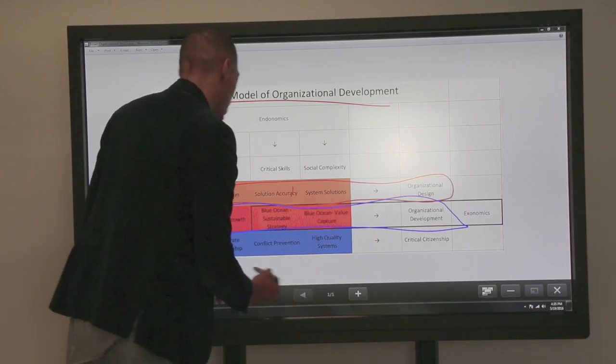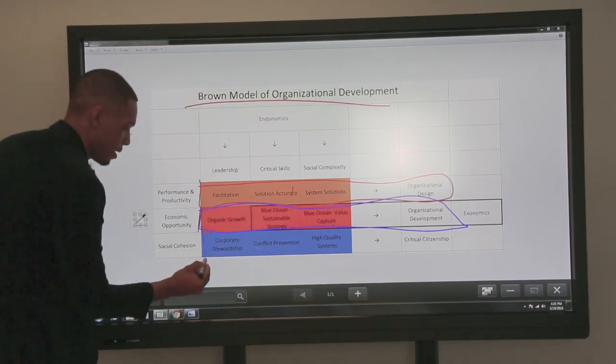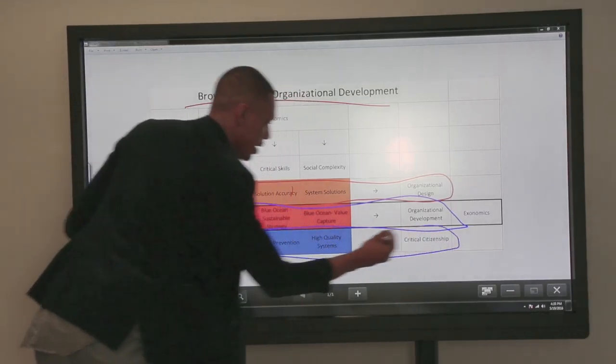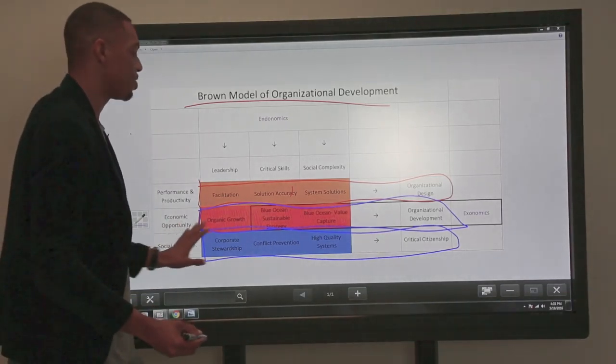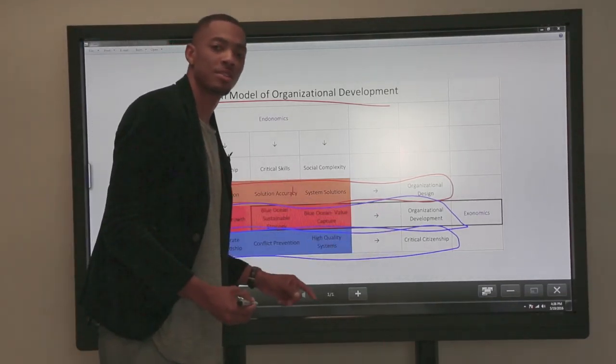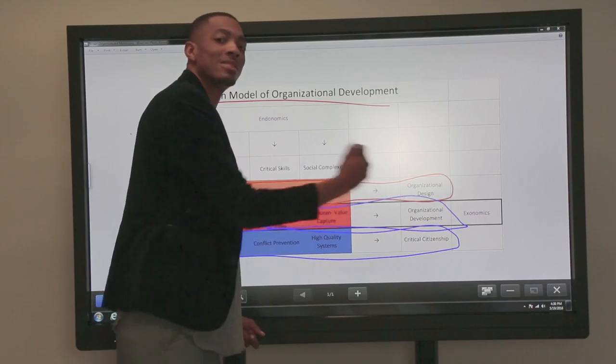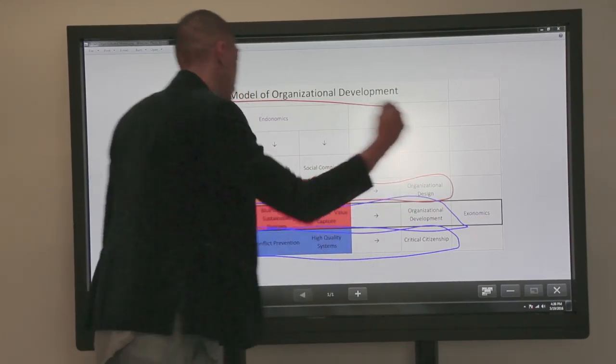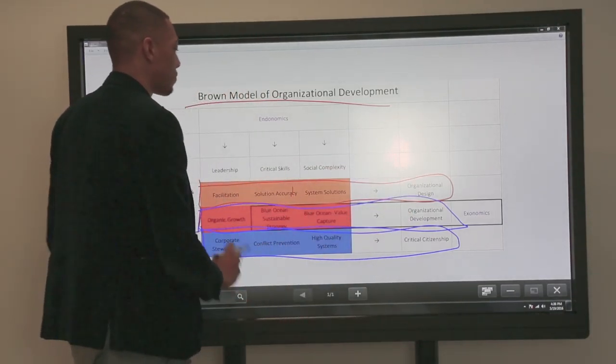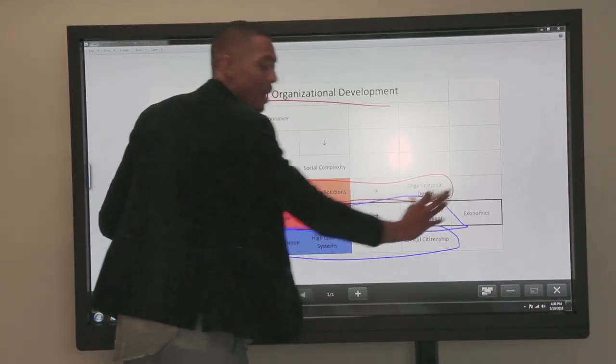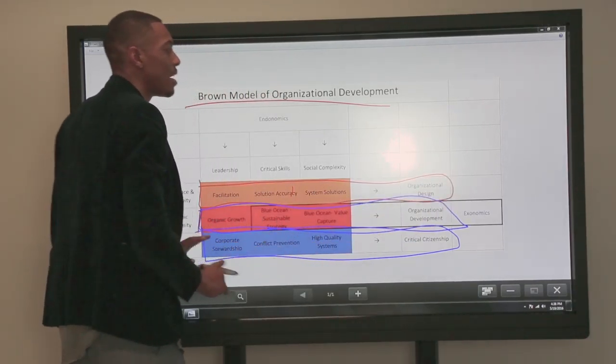The last is social cohesion, which gives rise to critical citizenship. How can I be a better citizen to my company, to my community, and ultimately to my society? That represents a second way of reading this matrix.